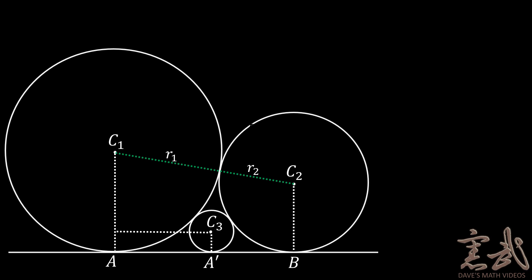We can now draw a line parallel to AA prime from point C3 that intersects the segment C1 at 90 degrees. We will do the same thing on the other side from C3 to the perpendicular line C2B. We will label these two points P1 and P2. Next, we will connect C1 with C3 and C2 with C3.